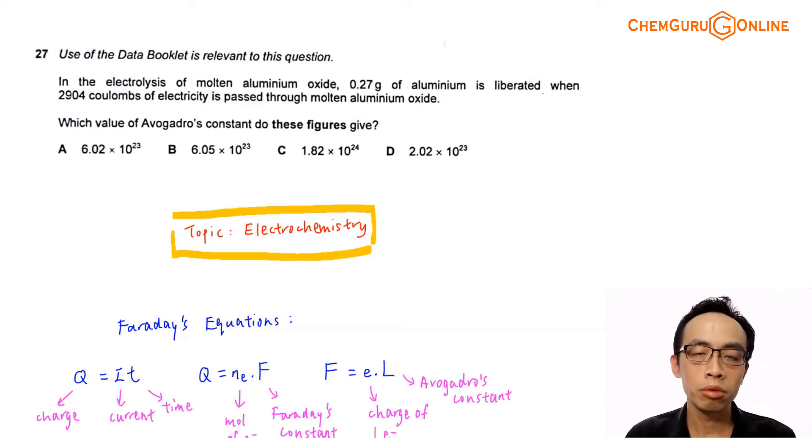Hi everyone, this is Maverick Poire, the chemistry guru. Now in this video, we want to discuss the suggested solution for 2021 A-levels H2 chemistry, paper 1, question 27.